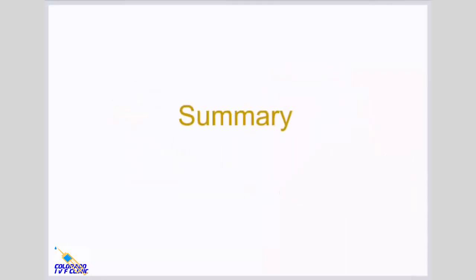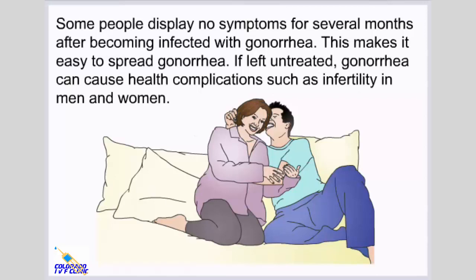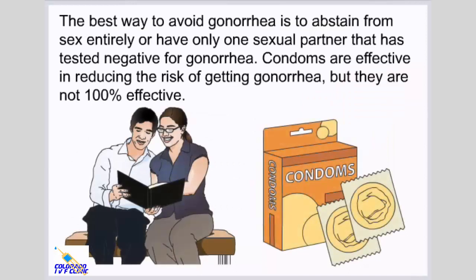Summary. Gonorrhea is a curable sexually transmitted disease caused by bacteria carried in semen and vaginal fluids. Millions of cases are reported worldwide every year, with sexually active teenagers and young adults having the highest rates. Some people display no symptoms for several months, making it easy to spread. If left untreated, gonorrhea can cause health complications such as infertility in men and women. Antibiotic medicines are used to treat gonorrhea, but drug-resistant strains are increasing around the world. All sexual partners should be tested and treated to prevent the disease from spreading. The best prevention is abstinence or one mutually monogamous partner who has tested negative. Condoms reduce the risk but are not 100% effective.